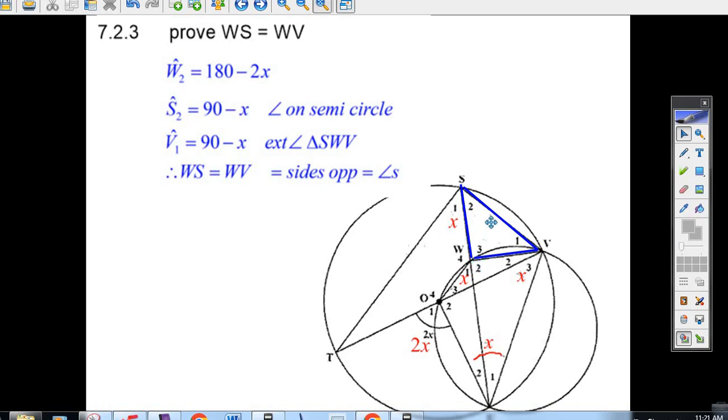Now, hey, these two angles together here open up to this diameter, to this semicircle. Well, that means that together, angle TSV must be 90 degrees.